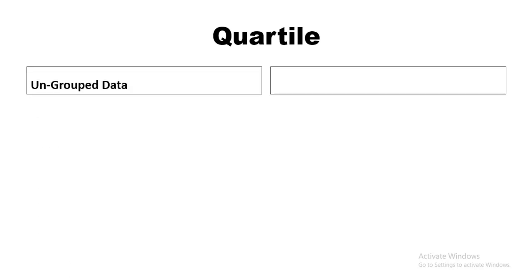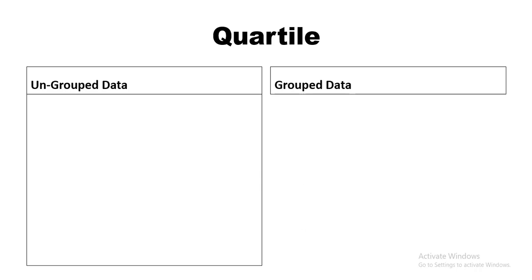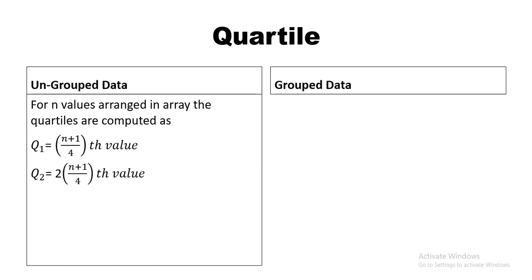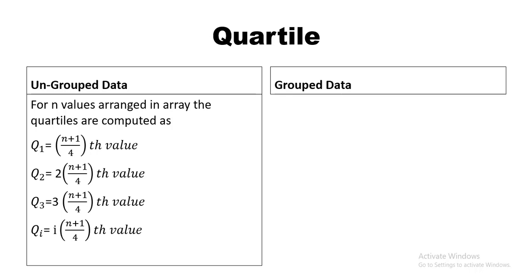Let's move on towards the formulas for quartile — for ungrouped data and for grouped data. For n values arranged in an array, the quartiles are computed as: Q1 equals (n+1)/4 th value; Q2 equals 2×(n+1)/4 th value; Q3 equals 3×(n+1)/4 th value. In general form, Qi = i×(n+1)/4 th value, where i goes from 1 to 3.